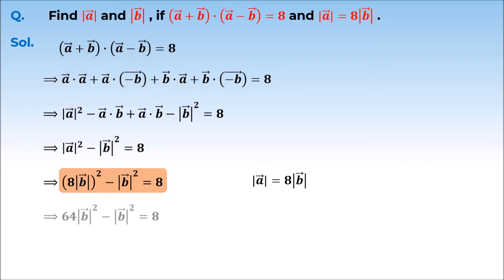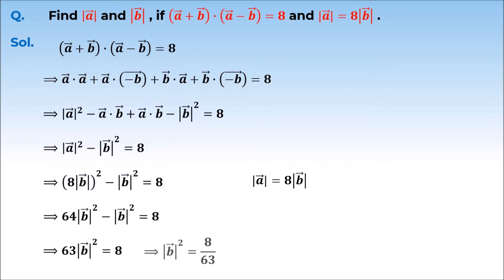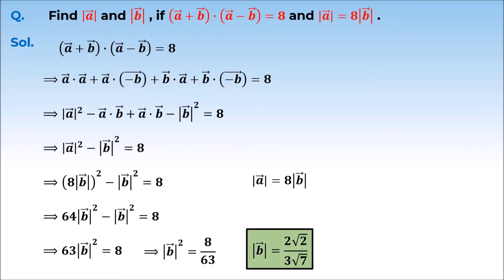If we simplify it, we can write magnitude of B vector squared is equal to 8 by 63. Therefore, magnitude of B vector is equal to 2 root 2 upon 3 root 7.